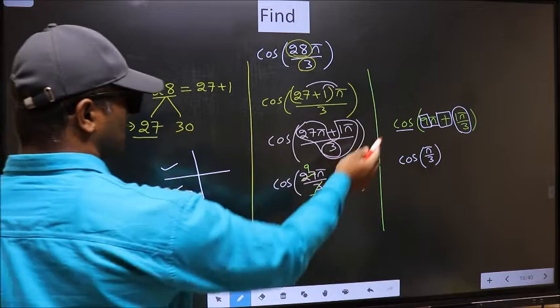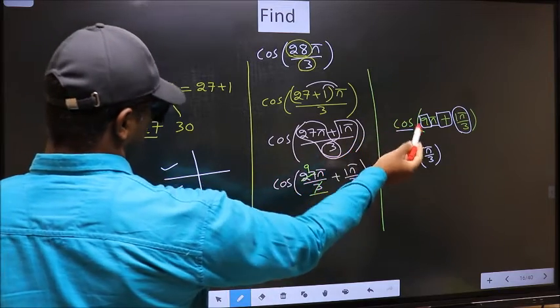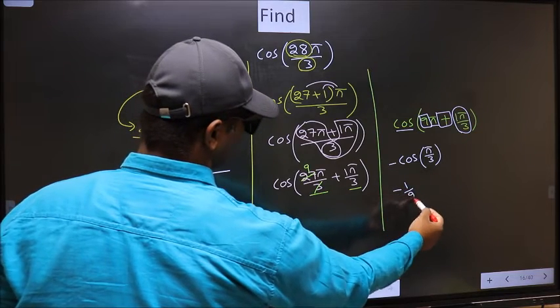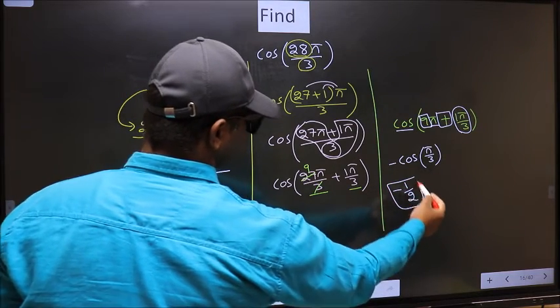And in the third quadrant, cos is negative. So we should put negative. Negative cos(π/3) is -1/2. So this is our answer.